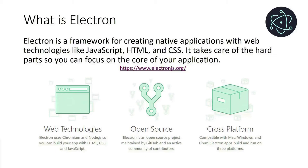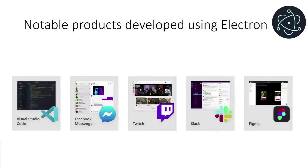It's also a cross-platform framework that's compatible with Mac, Windows, and Linux. Some notable products that have been developed using Electron are Visual Studio Code, which we will be using in this tutorial, Facebook Messenger, Twitch, Slack, Figma, and much, much more.